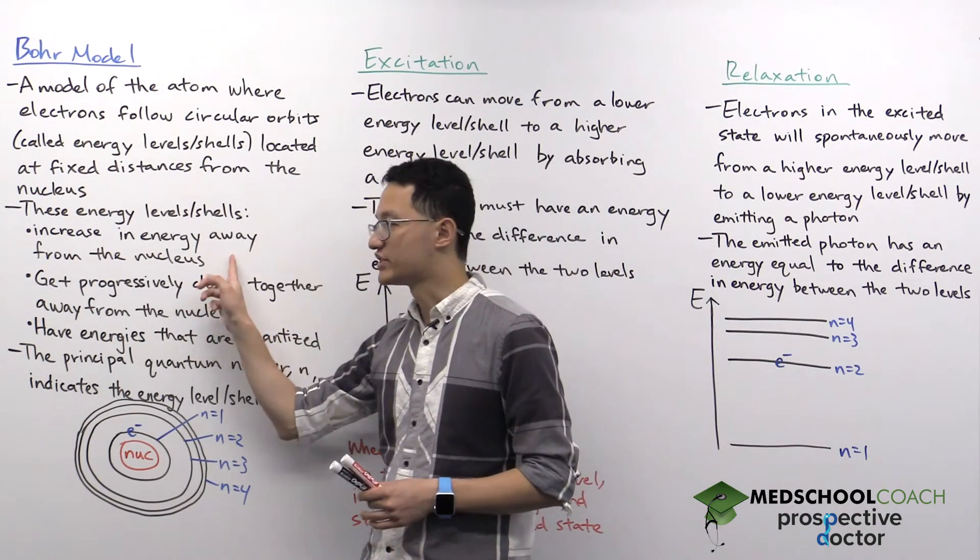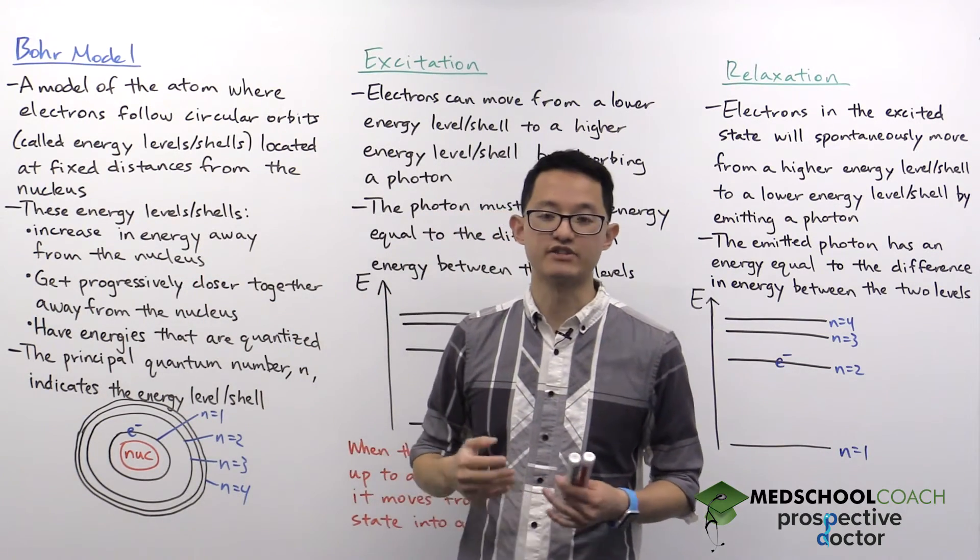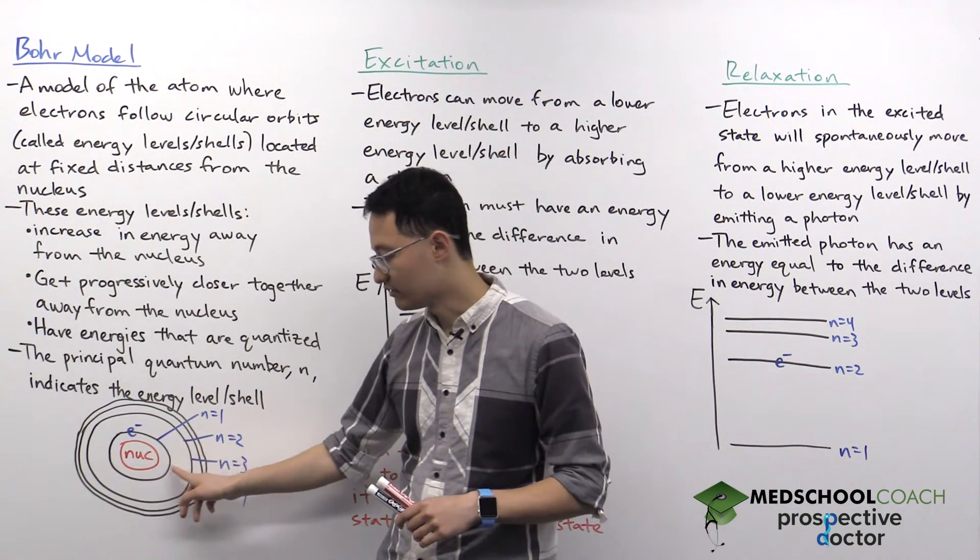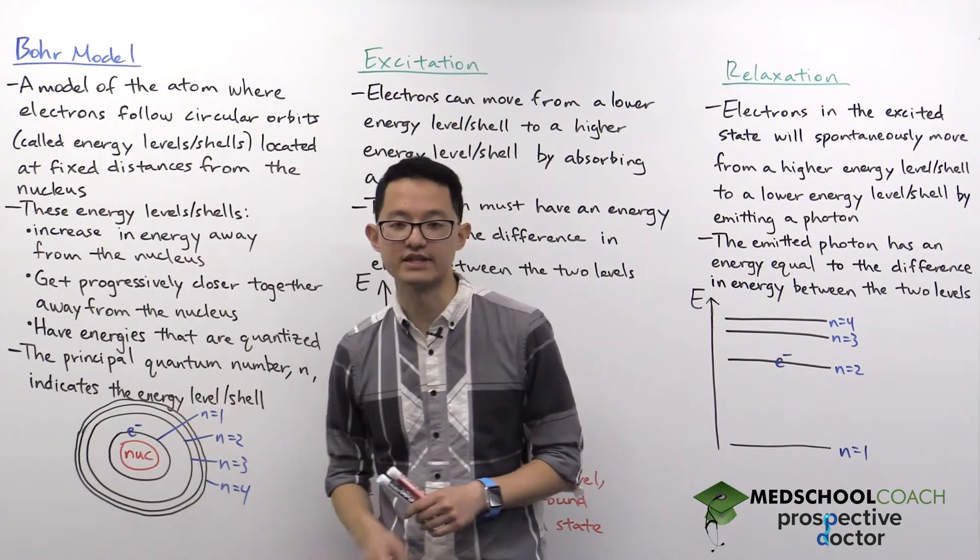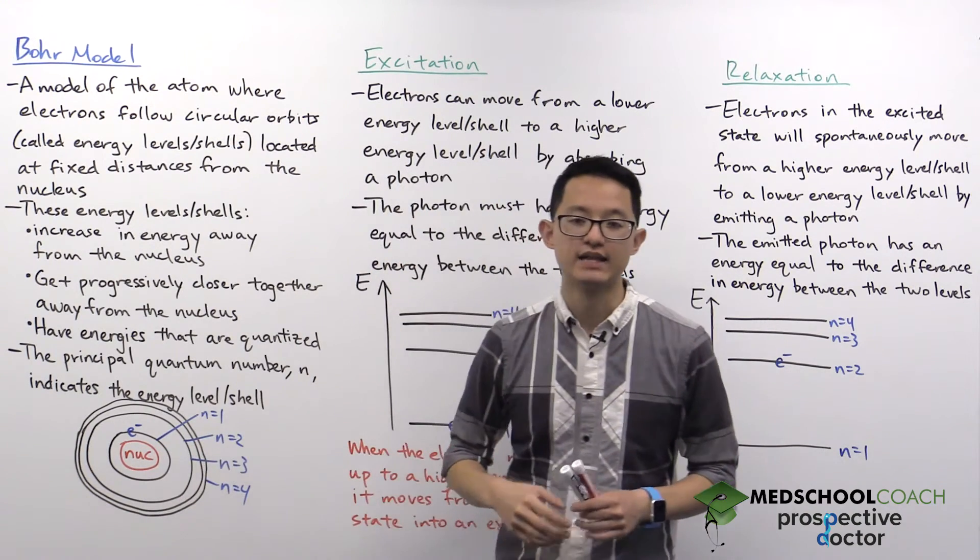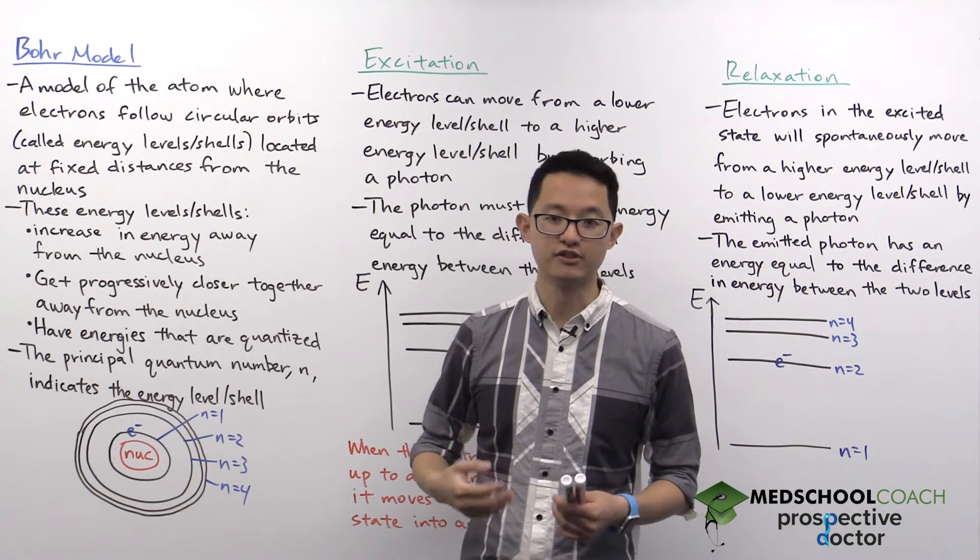Number one, the energy of these shells increase as you move away from the nucleus. That means the first shell, the one closest to the nucleus, is the lowest in energy. And as you move away from the nucleus, the energy of each shell increases.